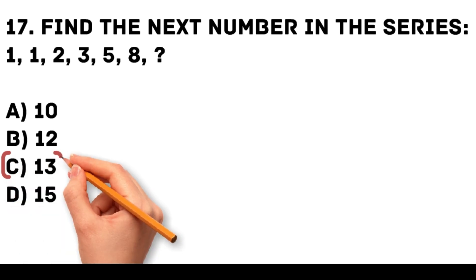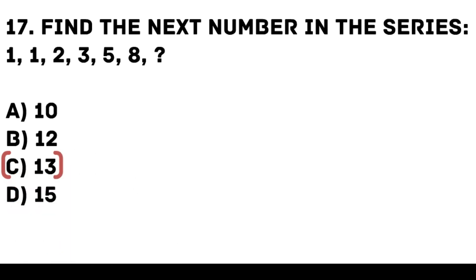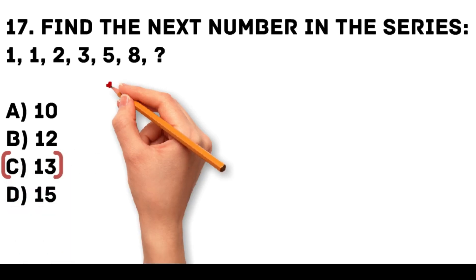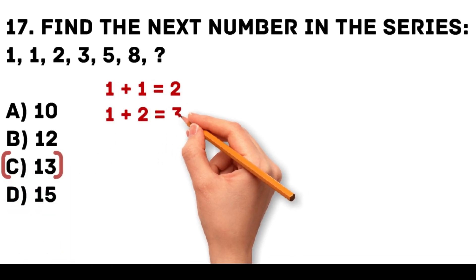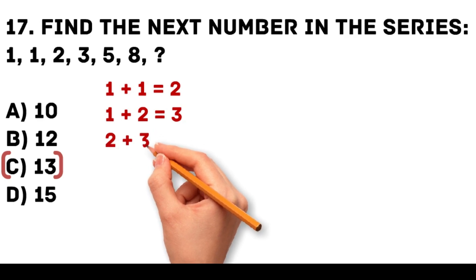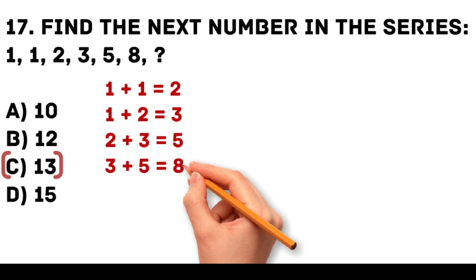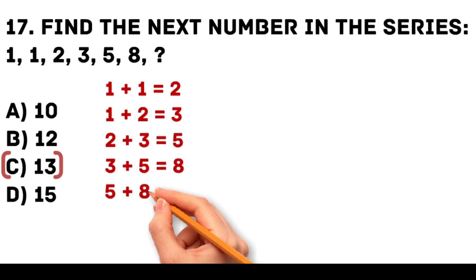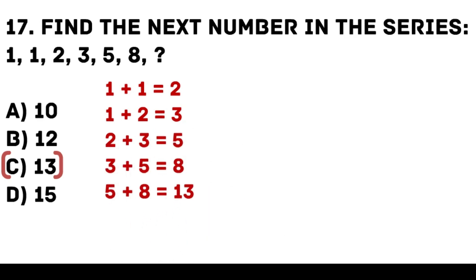Answer: C. 13. The series is a Fibonacci sequence where each number is the sum of the two preceding ones. 1 plus 1 is equal to 2. 1 plus 2 is equal to 3. 2 plus 3 is equal to 5. 3 plus 5 is equal to 8. 5 plus 8 is equal to 13.